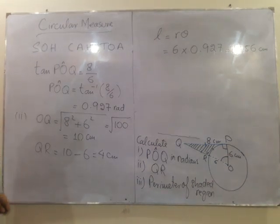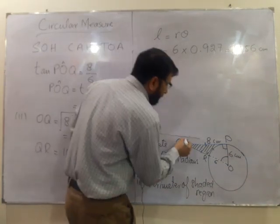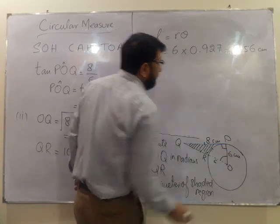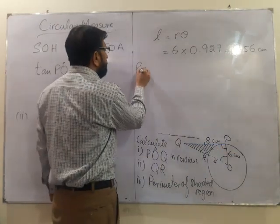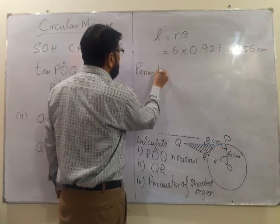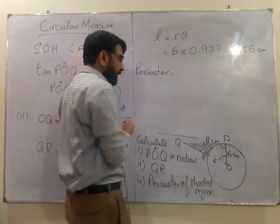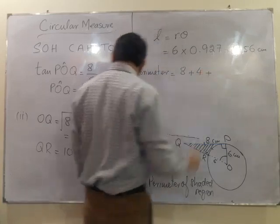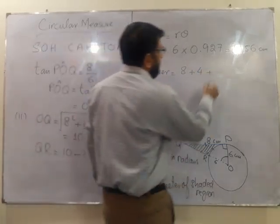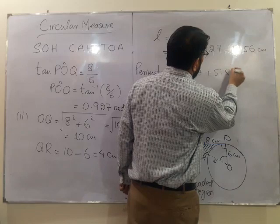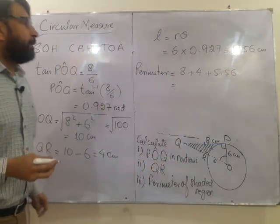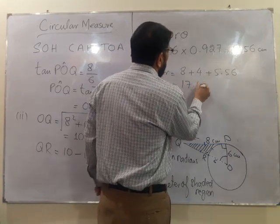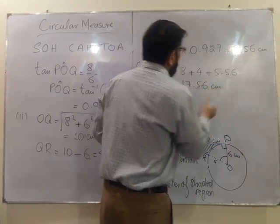So the perimeter of the shaded region which is consisting of PQ, QR and RP circular. So the perimeter is going to be, as we know, perimeter is sum of all sides. So it is 8 plus 4 and plus 5.56 which gives us 8 plus 4 is 12, 12 plus 5 is 17.56 centimeters.